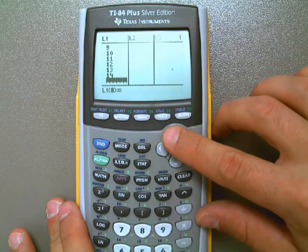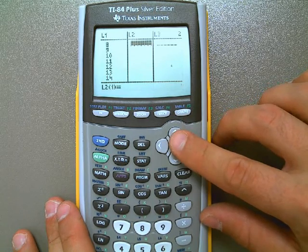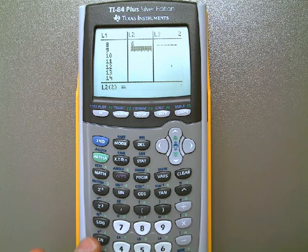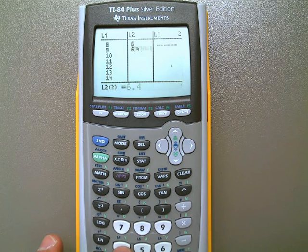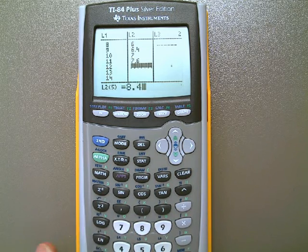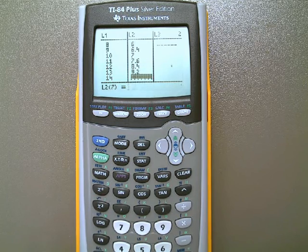And list 2, I'm going to come over here, I'm going to hit to the right and move over to list 2, and I need to enter my y-values there. That happens to be 6, 6.4, 7, 7.6, 8.4, 9.2, and 10.3.